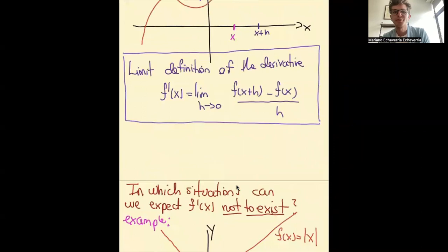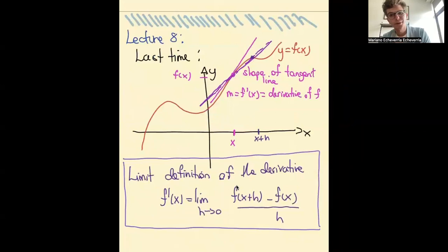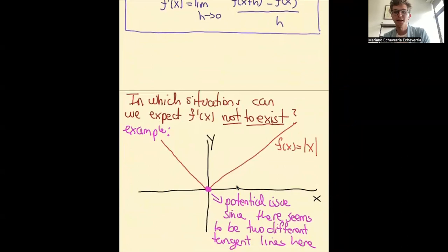Just to have this on the recording — this was a quick summary of what I just said. This was the limit definition of the derivative, and if you're looking, now we're looking at situations where the derivative may not exist.